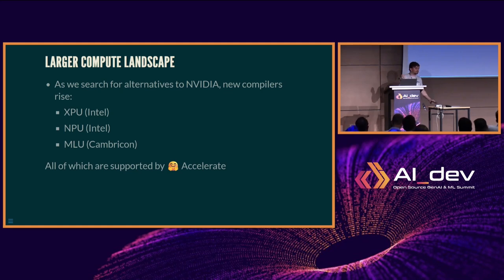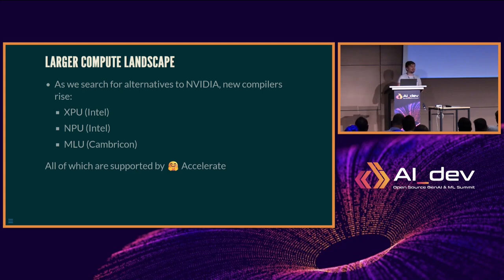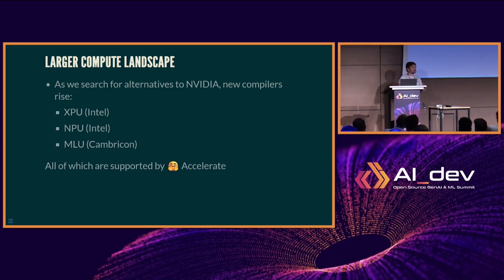We're seeing more compilers and new backends as people want to take on NVIDIA. We've had XPU and NPU out of Intel in the last year or two, and MLU out of CambriCon. These are brand-new compilers that operate via a patching mechanism — you just import torch.npu and it swaps everything to use NPU. We do that automatically, so you never have to worry about it.